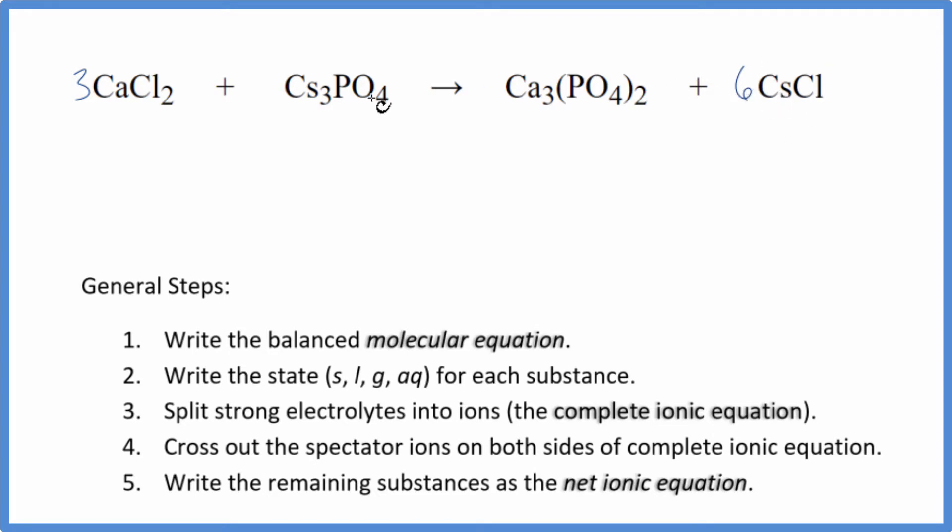But now I have six cesium atoms, three here. Put a two here. Cesium atoms are balanced. I have two phosphates. That's okay because I have two phosphates here. That's the balanced molecular equation.